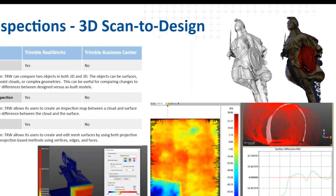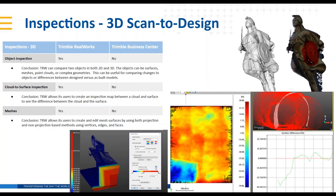The inspection routines in RealWorks can compare objects in both 2D and 3D. The objects can be surfaces, meshes, point clouds, or complex geometries. This is particularly useful for comparing changes — for example, when you've got a design model, you've scanned it, and you want to compare it to the point cloud as an as-built reflection of what was built in the field.